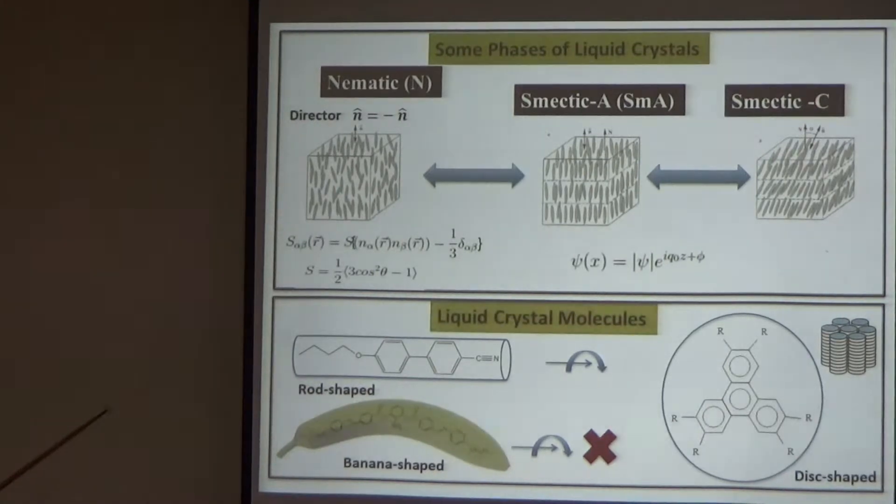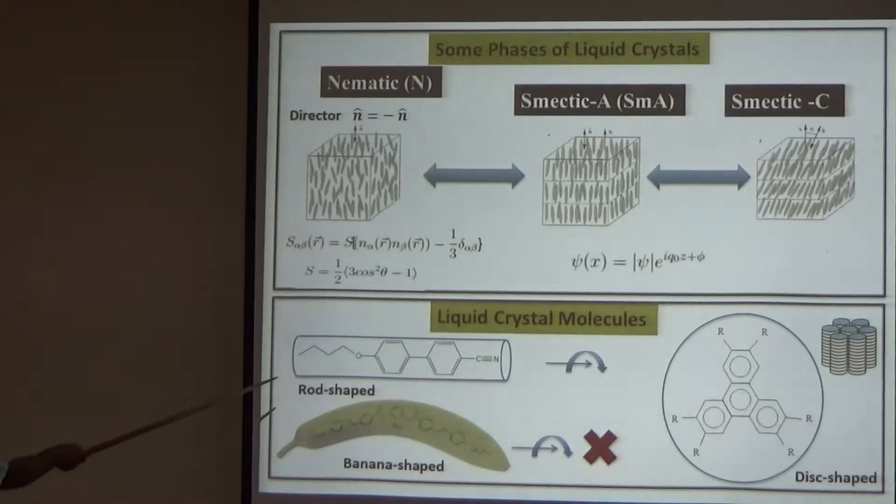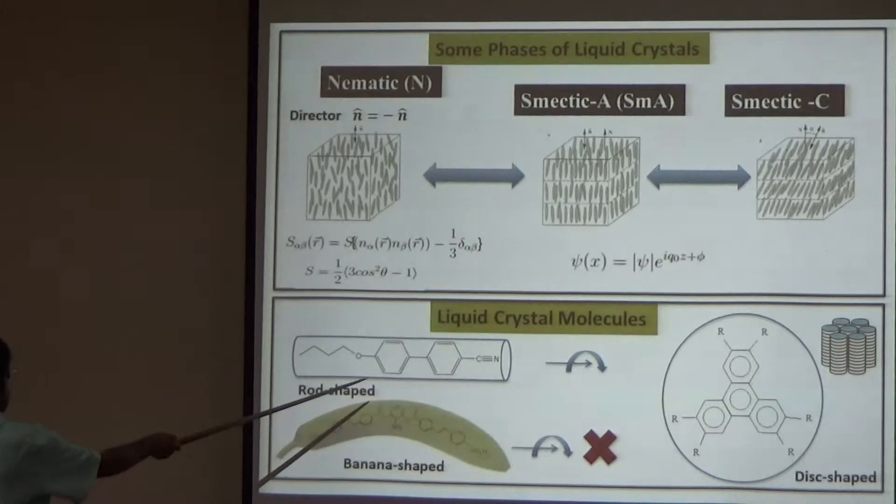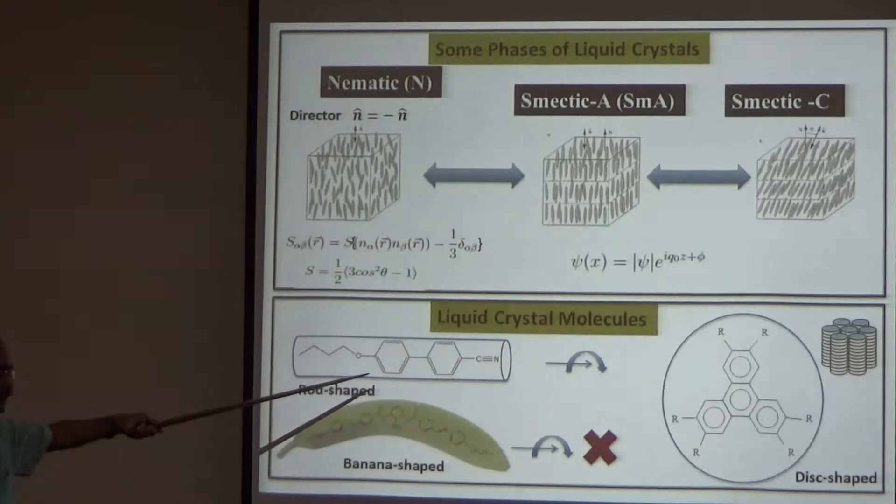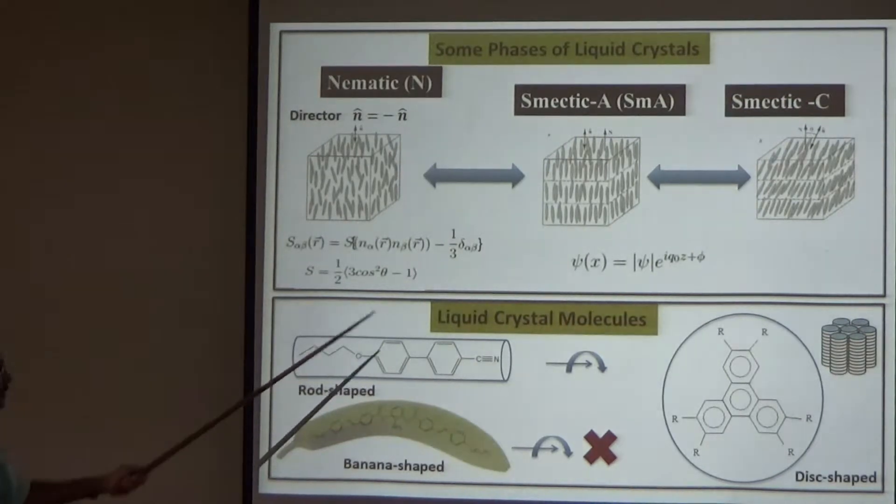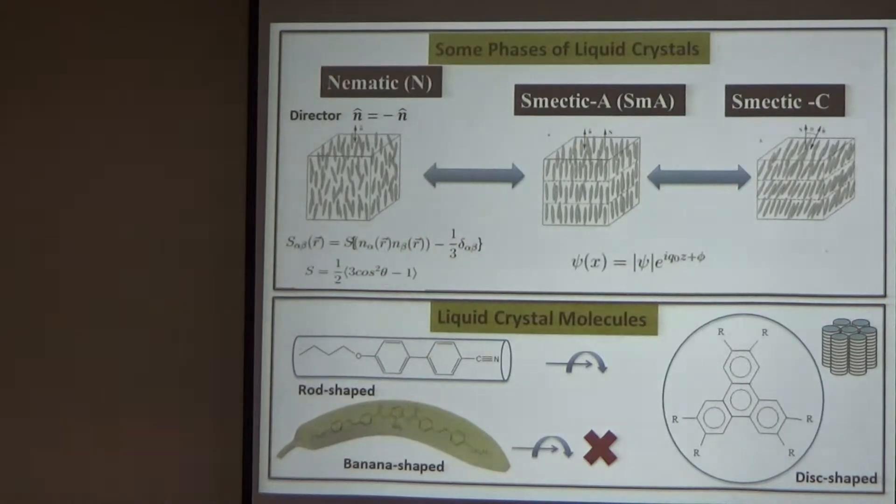These liquid crystals are made of organic molecules. A typical example is this rod-like molecule, like a biphenyl ring. You can see these molecules have cylindrical symmetry. Therefore, in the nematic phase, they can have free rotation along the long axis.